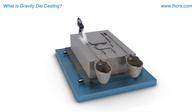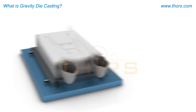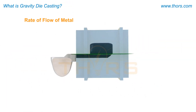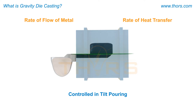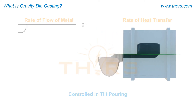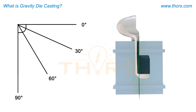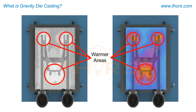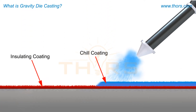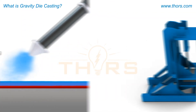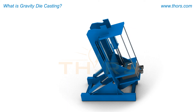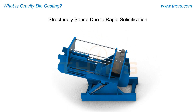The molds are inspected, cleaned, recoated if necessary, and used again. Controlling the rate of flow of metal into the die cavity and controlling the rate of heat transfer during solidification are the two operational parameters controlled in tilt-pouring. The rate of metal flow is regulated by adjusting the angle of tilt and the speed of tilt. The rate of heat transfer from the casting to the mold is managed by varying the thickness of the mold coating. The castings produced in permanent molds are structurally sound due to their rapid solidification rate.